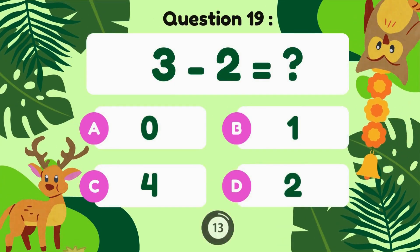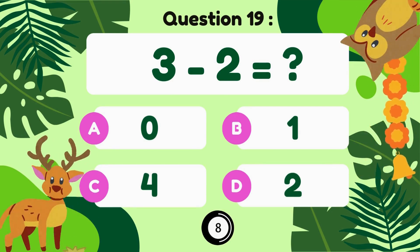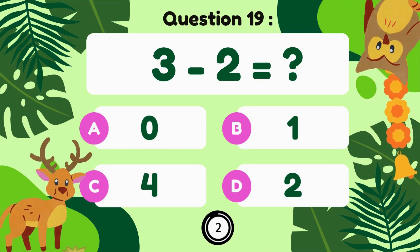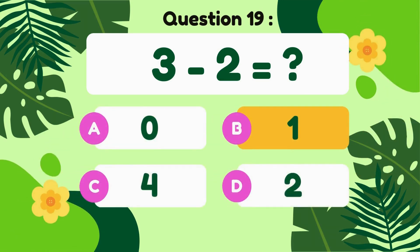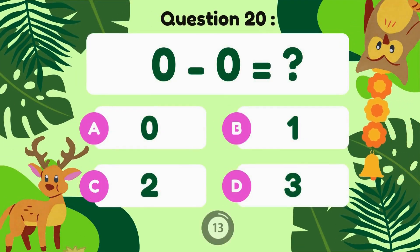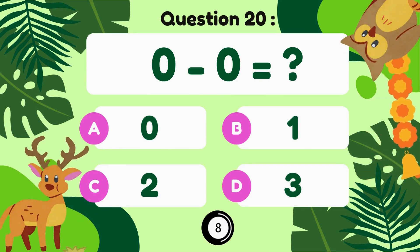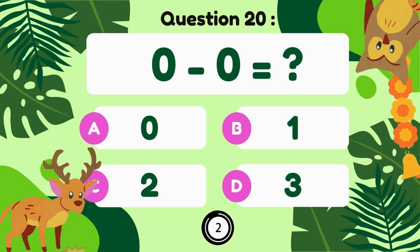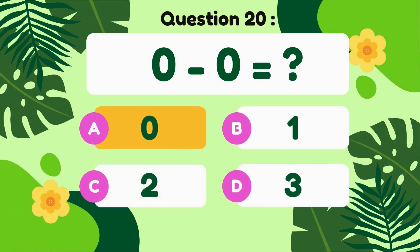3 minus 2... 3 minus 2 equals 1. 0 minus 0... 0 minus 0 equals 0.